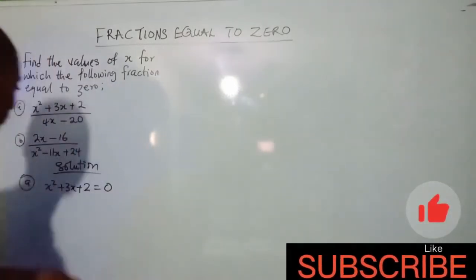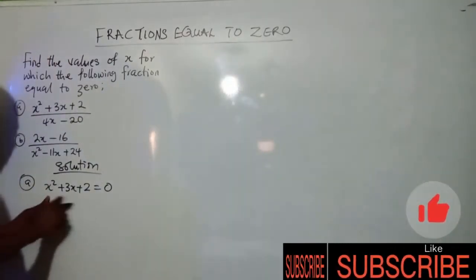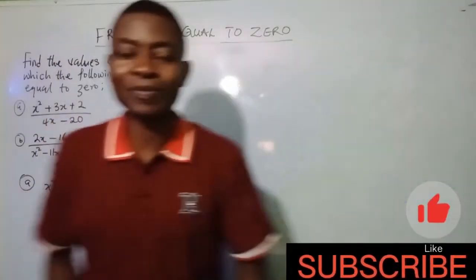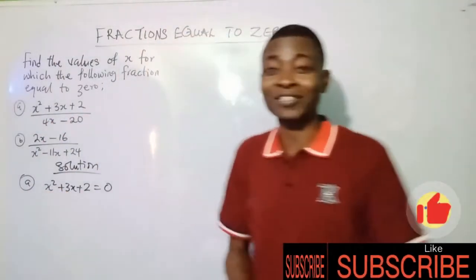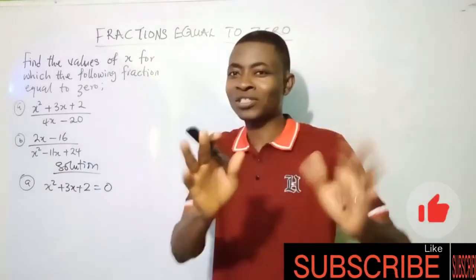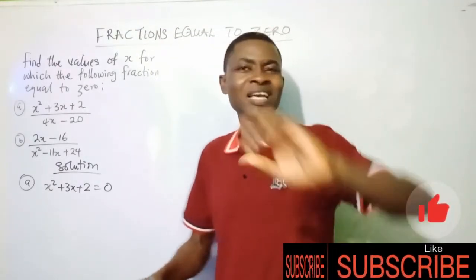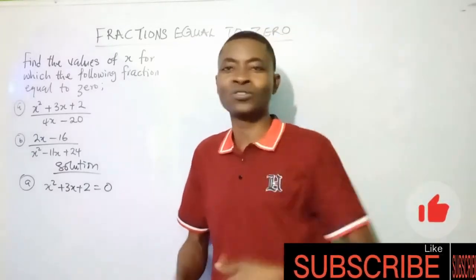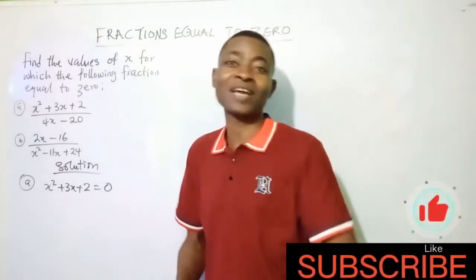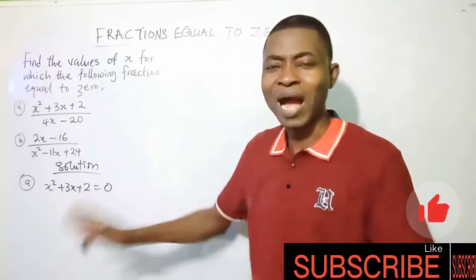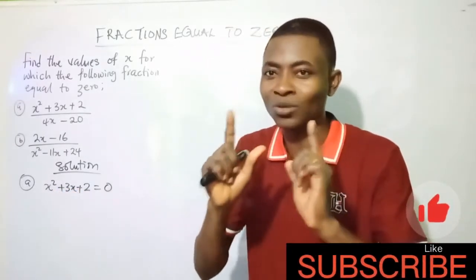We're going to find the values of x for this equation to equal zero. How do we do that? We can easily do this by factorizing. Factorization is one of the sweet topics in mathematics. We have uploaded videos on factorization. If you don't know how to factorize, please watch those videos. I can assure you there's no factorization you won't be able to do. I'll be asking myself just two questions.